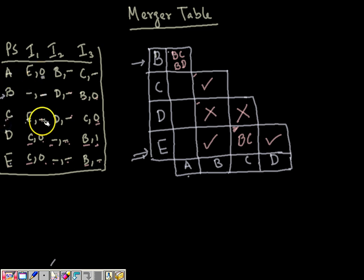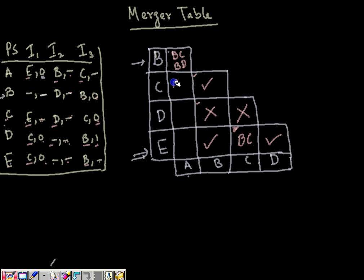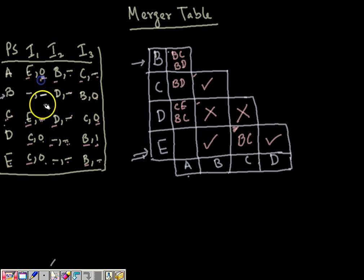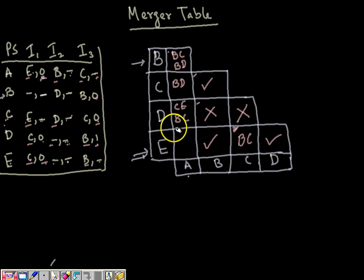For A-C: outputs are zero, not specified, not specified — same for all inputs. The next-state transitions are E, B, D vs. C, C — so A-C depends on B-D. For A-D: outputs are zero, zero, not specified — same; but for A-D to be compatible, C-E and B-C must both be compatible; we write C-E and B-C as dependencies. For A-E: outputs are same throughout. For A-E to be compatible, C-E and B-C must also both be compatible; we write C-E and B-C.